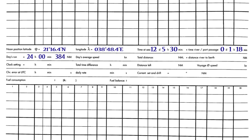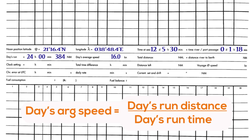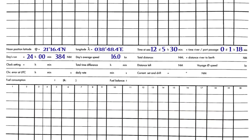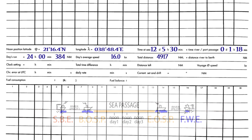Days run distance is the distance traveled by the ship from noon to noon. Days average speed is calculated as the ratio of days run distance to days runtime.